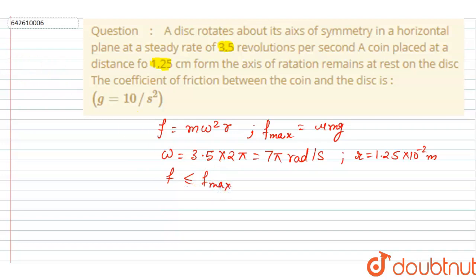So from here we can get the coefficient of friction. If I write m omega square r should be less than or equal to mu m g, this m will get cancelled out and you will get omega square r by g should be less than or equal to mu.